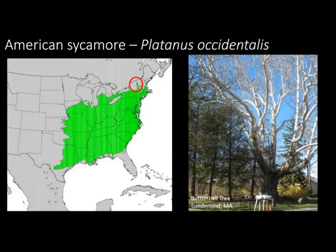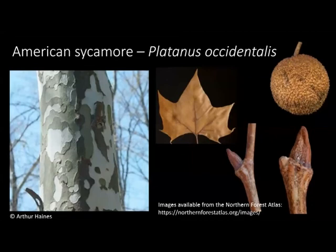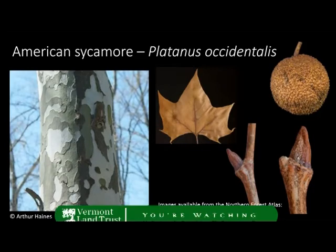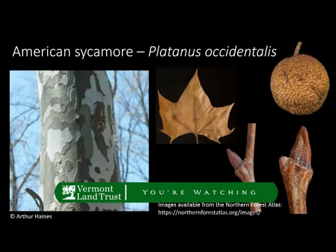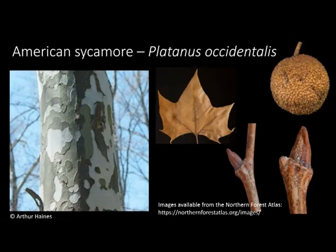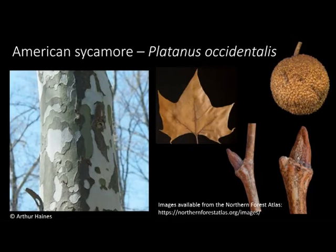Sycamores can get really big. The bark is very distinctive — it has a camouflage look with dark outer layers of bark that peel away to reveal white layers underneath. Other features: the twig has a zigzag pattern and a stout bud. The leaf looks a lot like a red maple leaf but without the teeth. The fruit for American sycamore is about a quarter to a half inch in diameter, held singly on a long stalk, and you can see them hanging in the trees in winter.